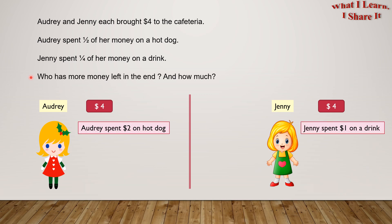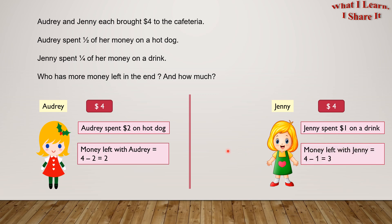Who has more money left in the end? And how much? Now we have to find how much money is left with each girl. Money left with Audrey equals four dollars minus two dollars equals two dollars. And money left with Jenny equals four dollars minus one dollar equals three dollars.